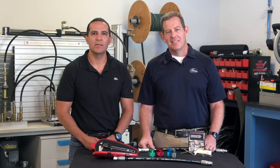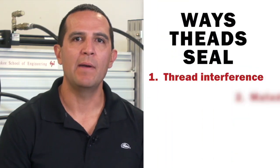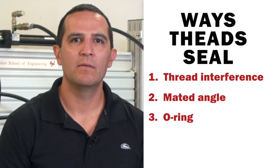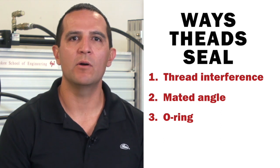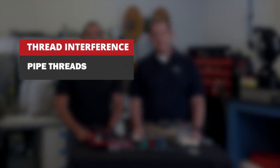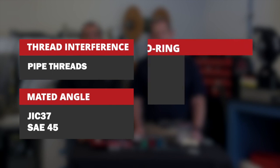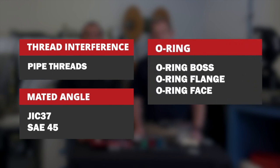Threads seal in three different ways: thread interference, mated angle, and o-ring. For this training, we are going to focus on the common thread ends. Thread interference are your pipe threads. Mated angle seal are your JIC 37 and SAE 45. O-ring seals are your o-ring boss, o-ring flange, and o-ring face seal.